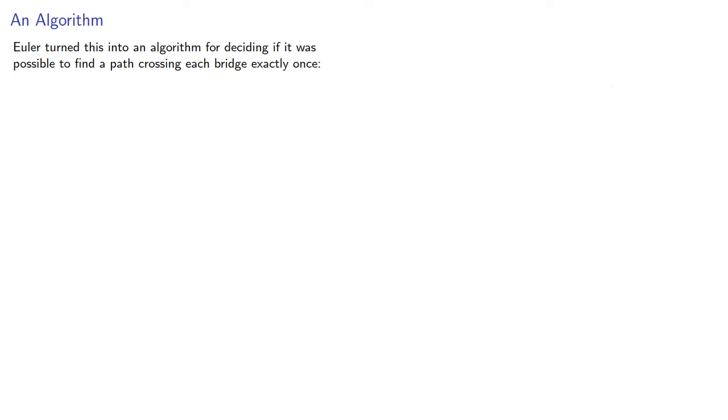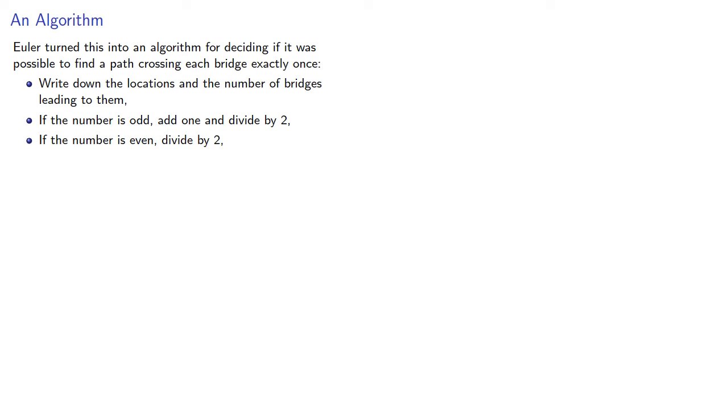Euler turned this into an algorithm for deciding if it was possible to find a path crossing each bridge exactly once. Write down the locations and the number of bridges leading to them. If the number is odd, add one and divide by two. If the number is even, divide by two. If the sum is not equal to the number of bridges plus one, then it is not possible to find a path that crosses each bridge exactly once.